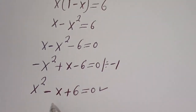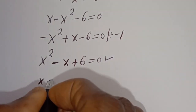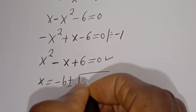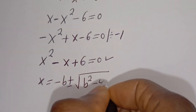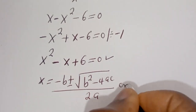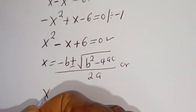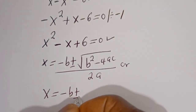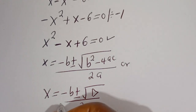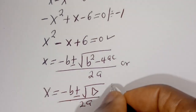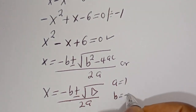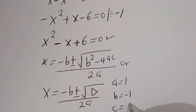Let's solve this using the quadratic general formula: x is equal to minus B plus or minus square root of B squared minus 4AC over 2A. From this equation, A is equal to 1, B is equal to minus 1, C is equal to 6.